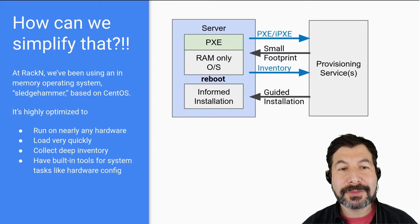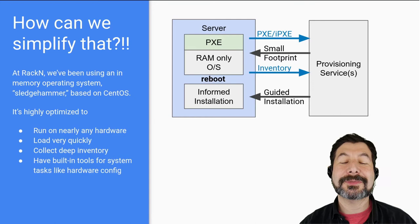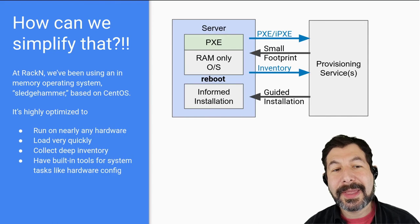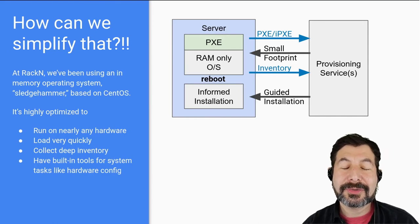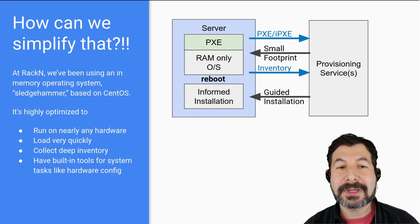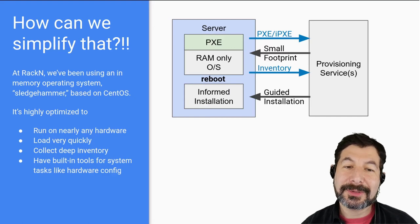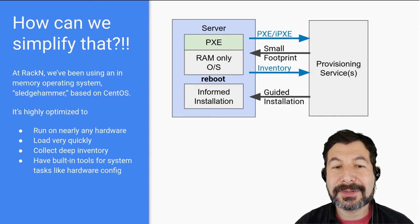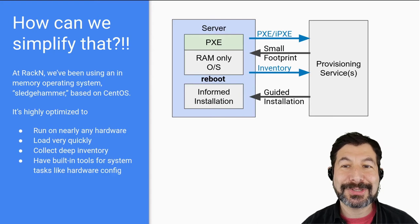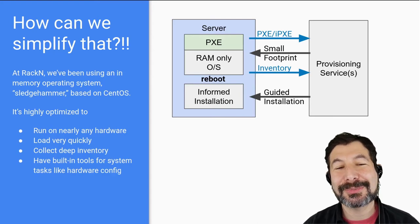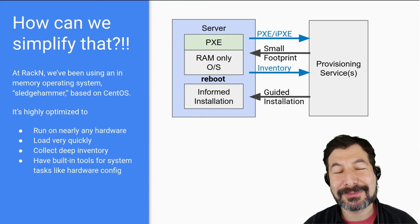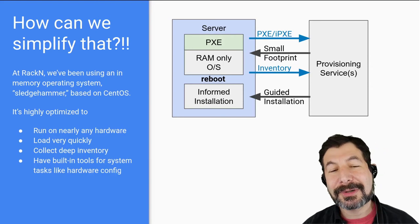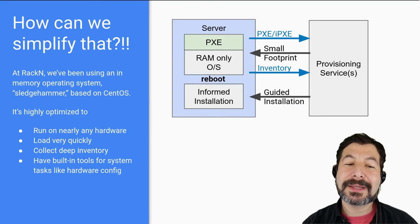So let's dive in. The first thing you'll want to know is how do we actually simplify this basic process, because there are a lot of steps going on. What we've done — and found incredible success with — is using an in-memory OS we call Sledgehammer, designed to boot pretty much everywhere. Today it's based on CentOS 7; we're migrating to CentOS 8. It's a very special curated version — really its own OS based on CentOS — and it is highly, highly optimized.